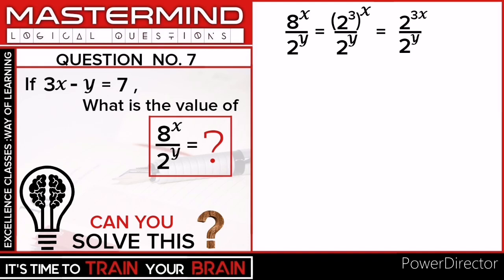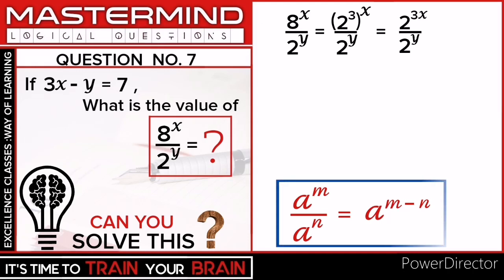Students, here we use the rule of division of different exponents on same base. That is a raised to m upon a raised to n is equals to a raised to m minus n.